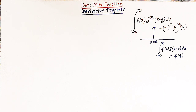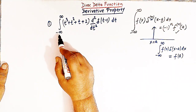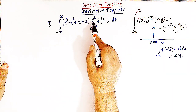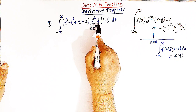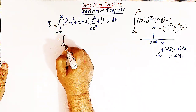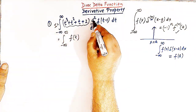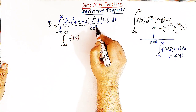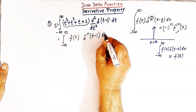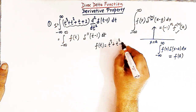So based on this derivative property, let us solve two important problems. Consider the first problem in which we have to evaluate the integral from minus infinity to infinity of (t³ + t² + t + 2) times the second derivative of the delta function, delta''(t minus 1), dt. Let us call this integral I. We can take the polynomial as f(t), and the notation d²/dt² can be written as delta double prime of (t minus 1).